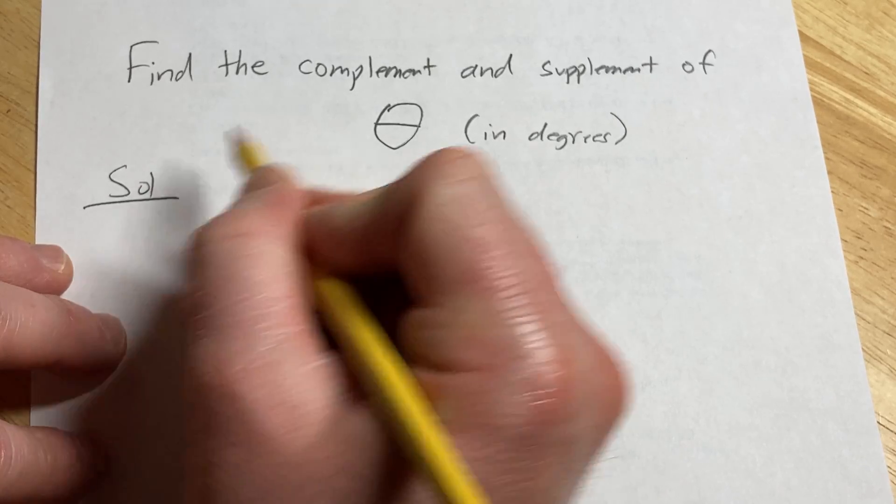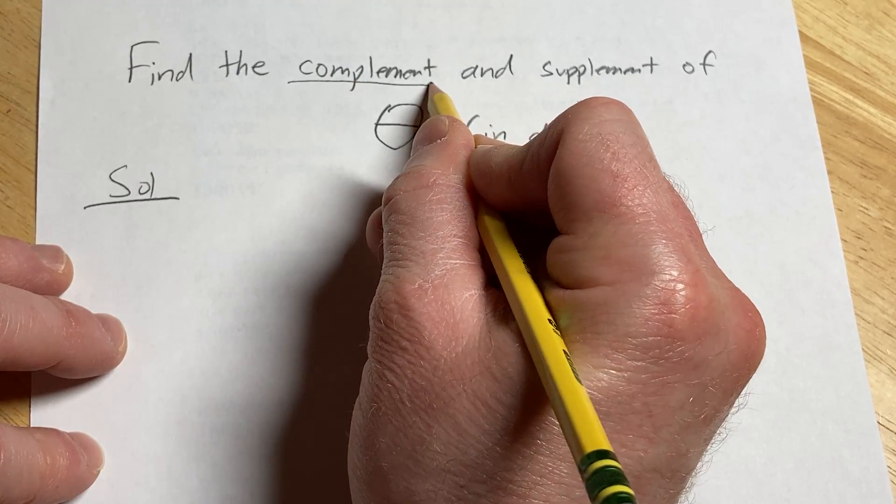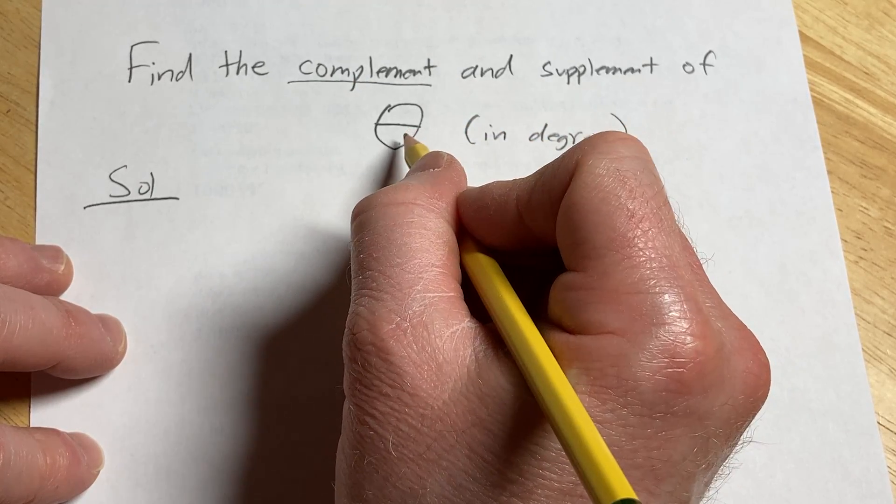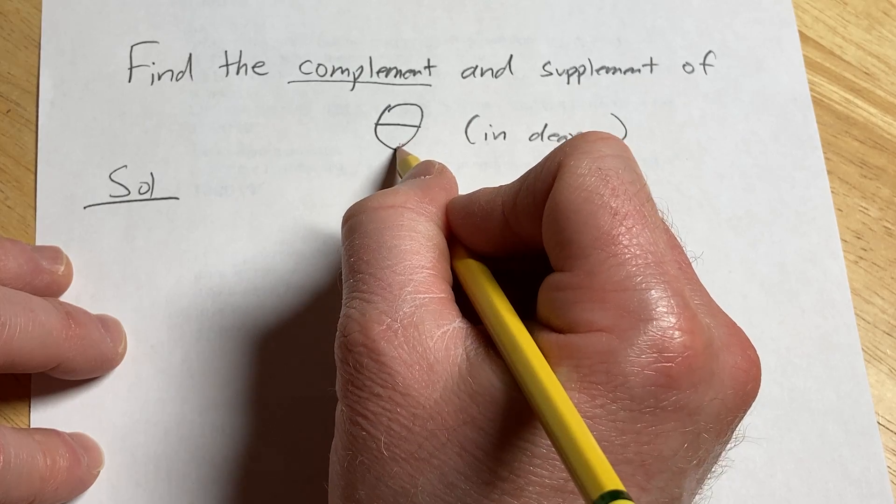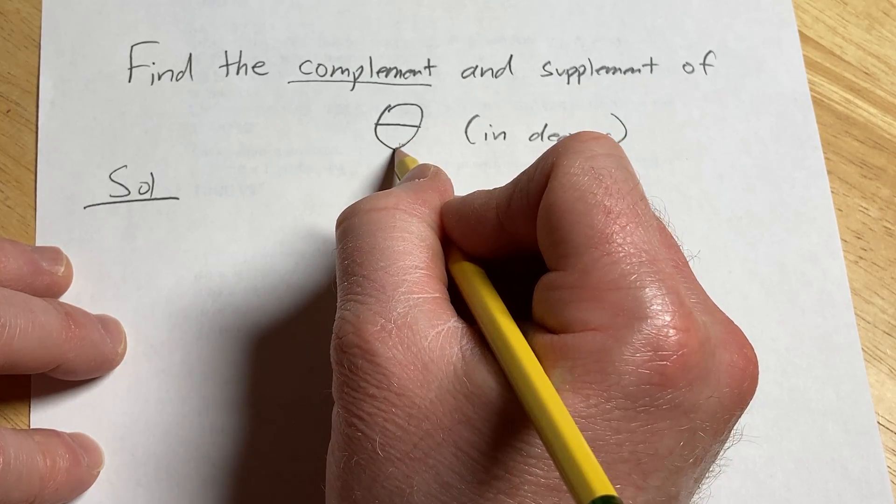Solution. Let's start with the complement. We need to find an angle that we can add to theta that's going to give us 90 degrees.